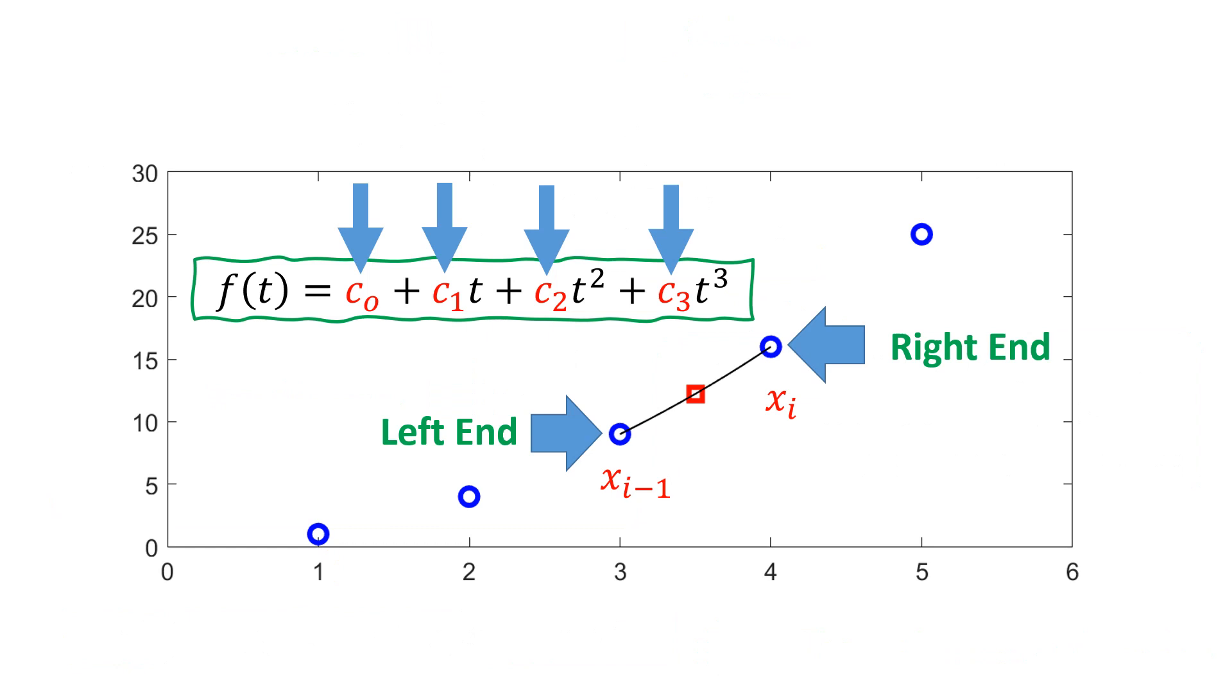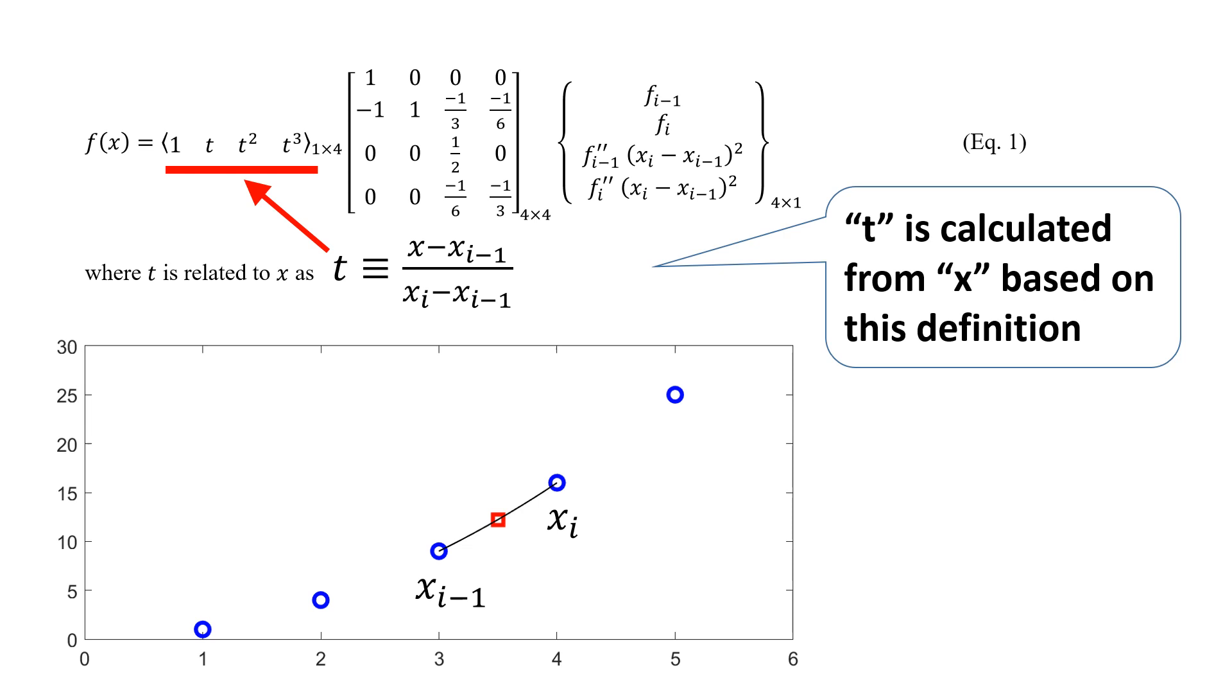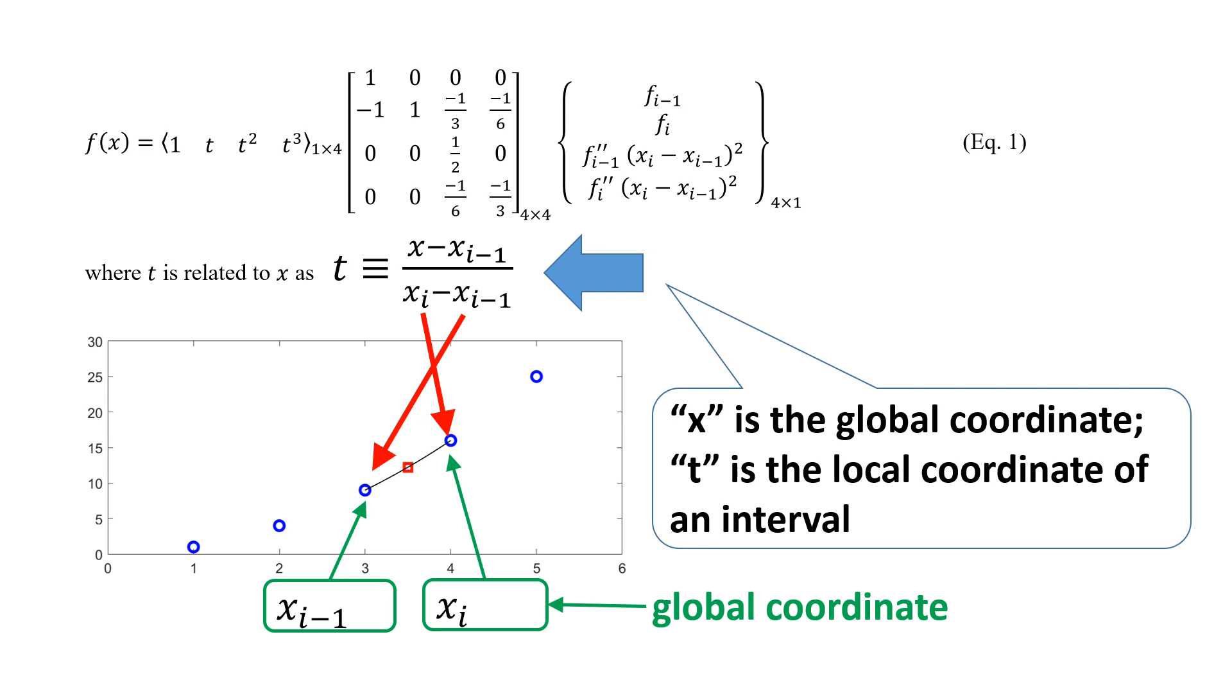Coefficients are defined by the two ends of the interval. T is calculated from x based on this definition. X is the global coordinate. T is the local coordinate of an interval.